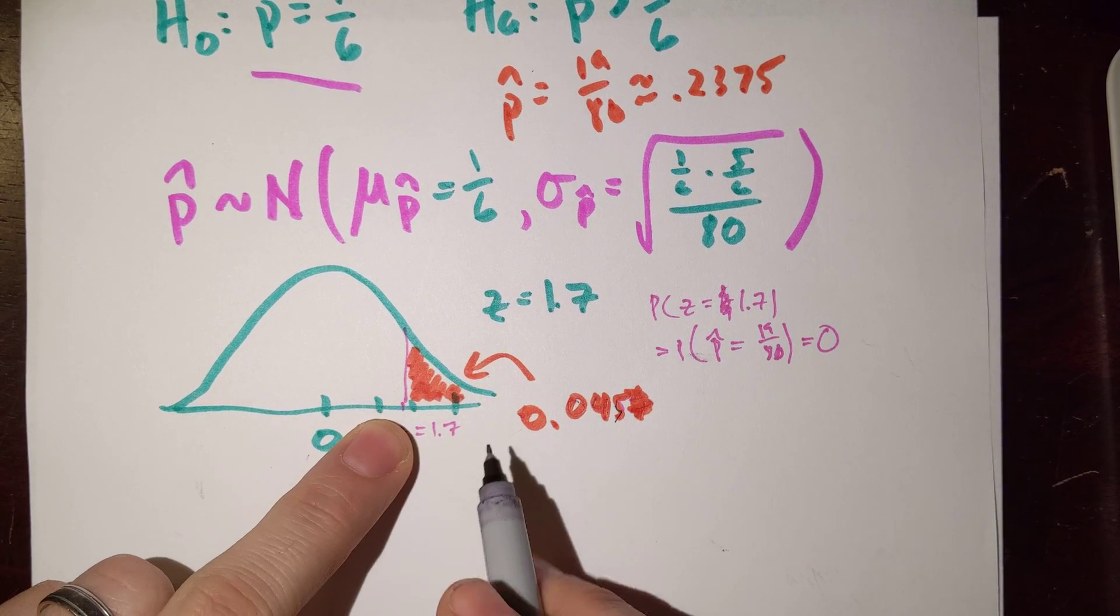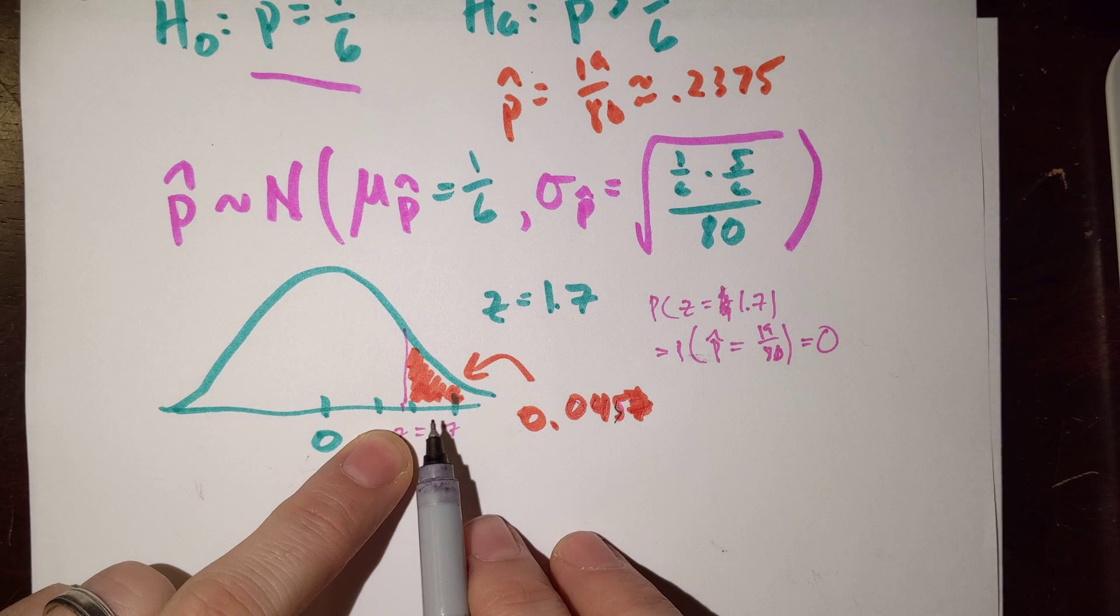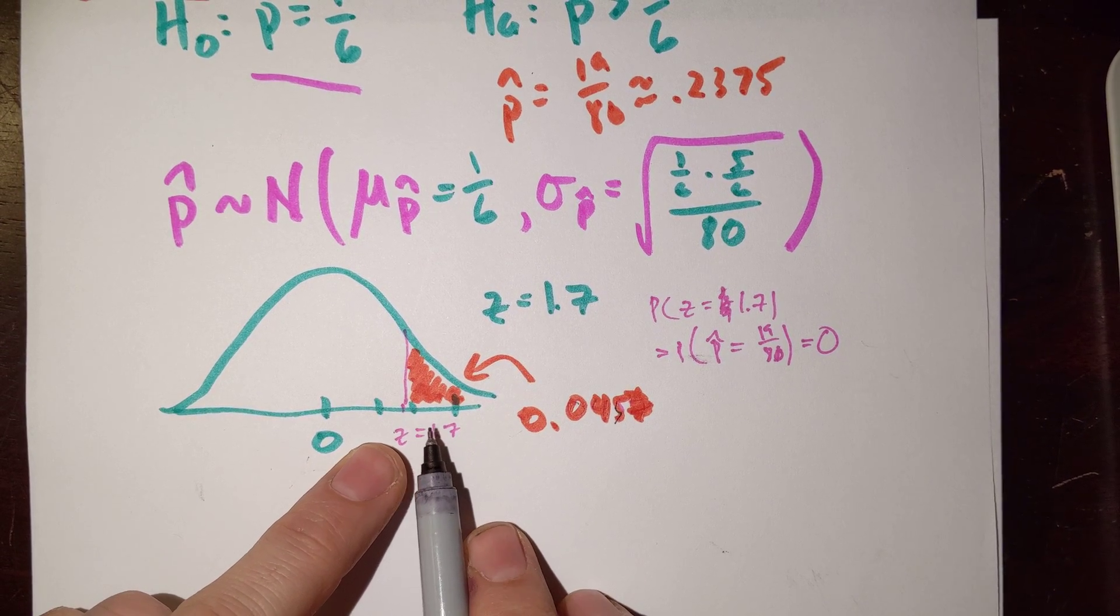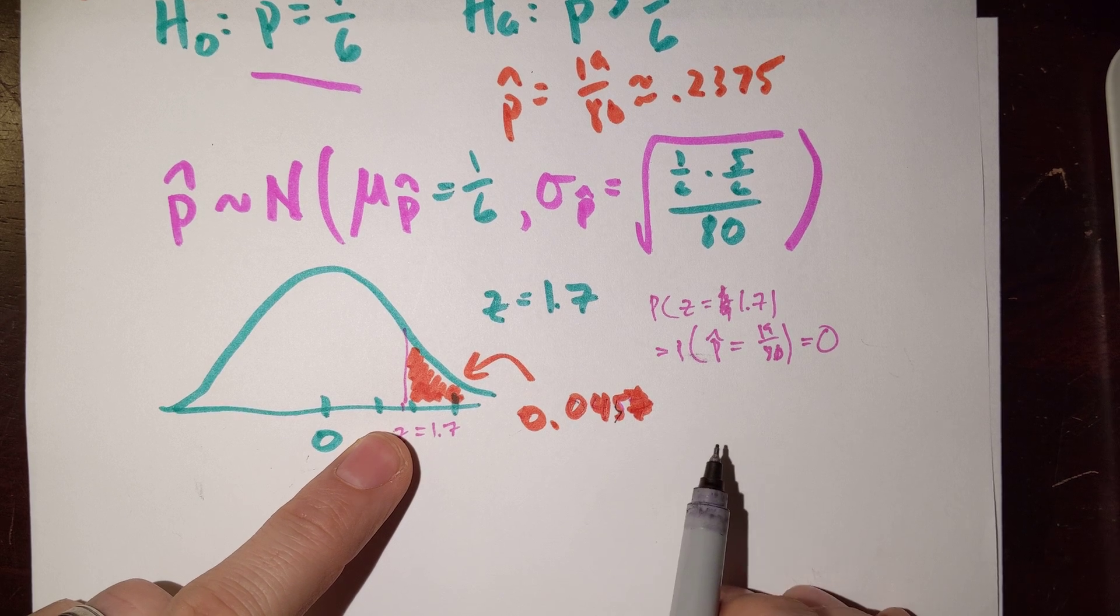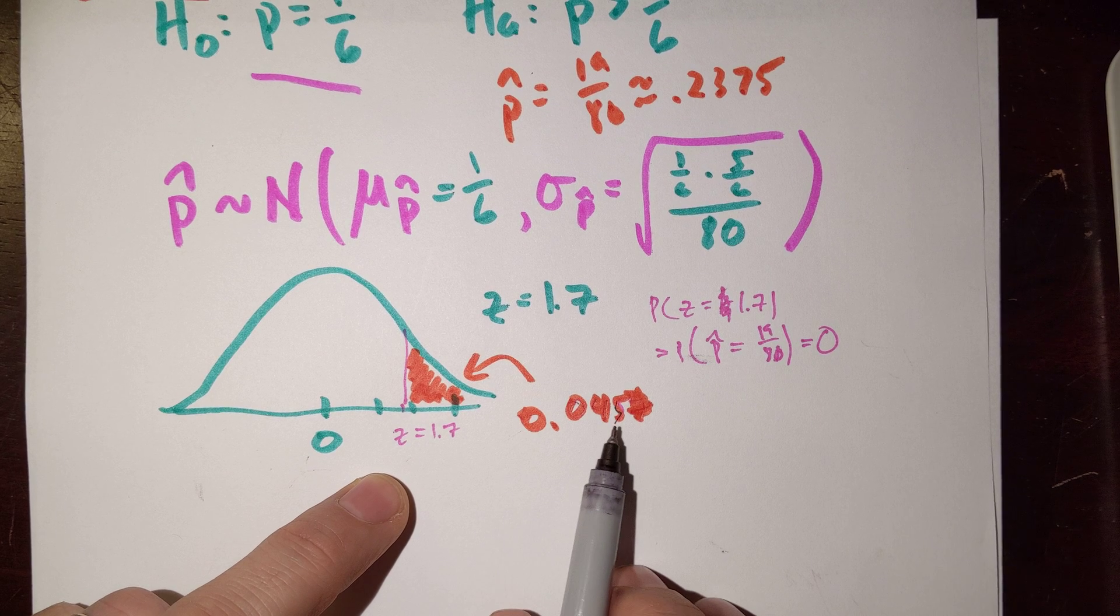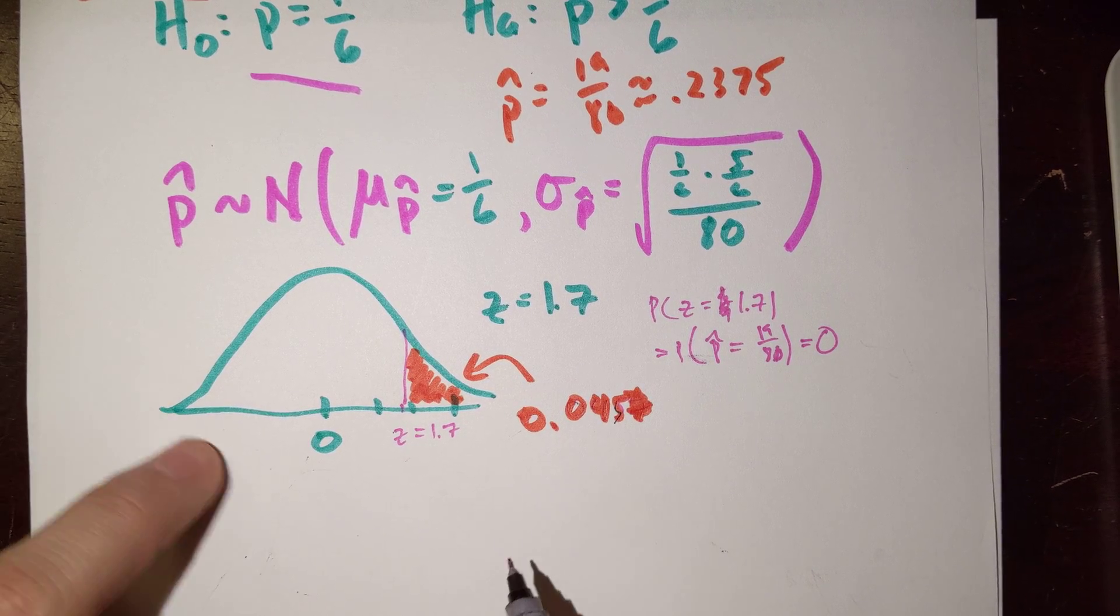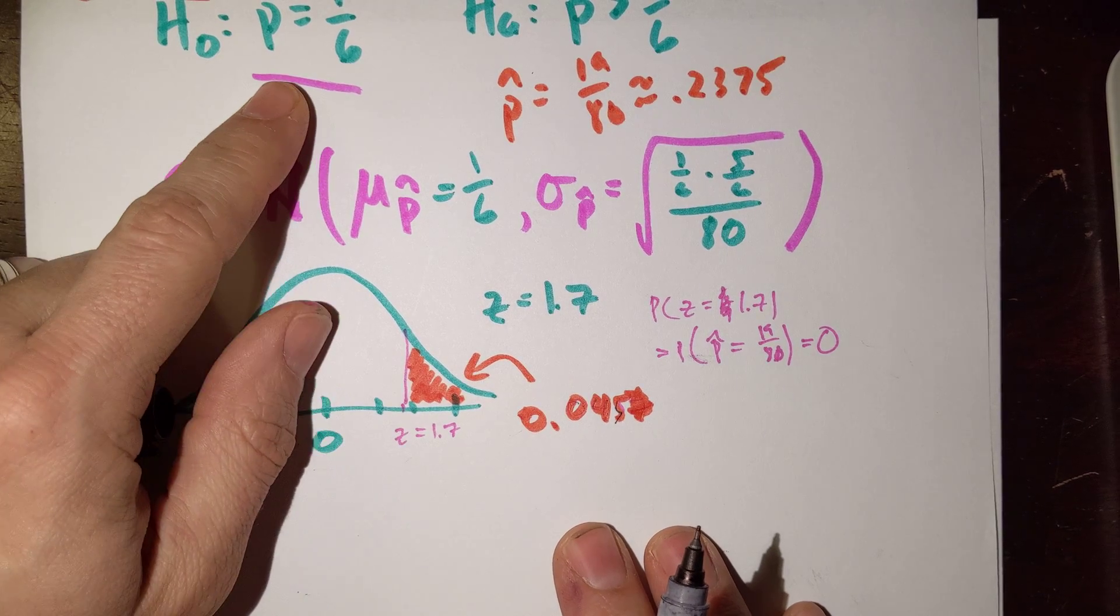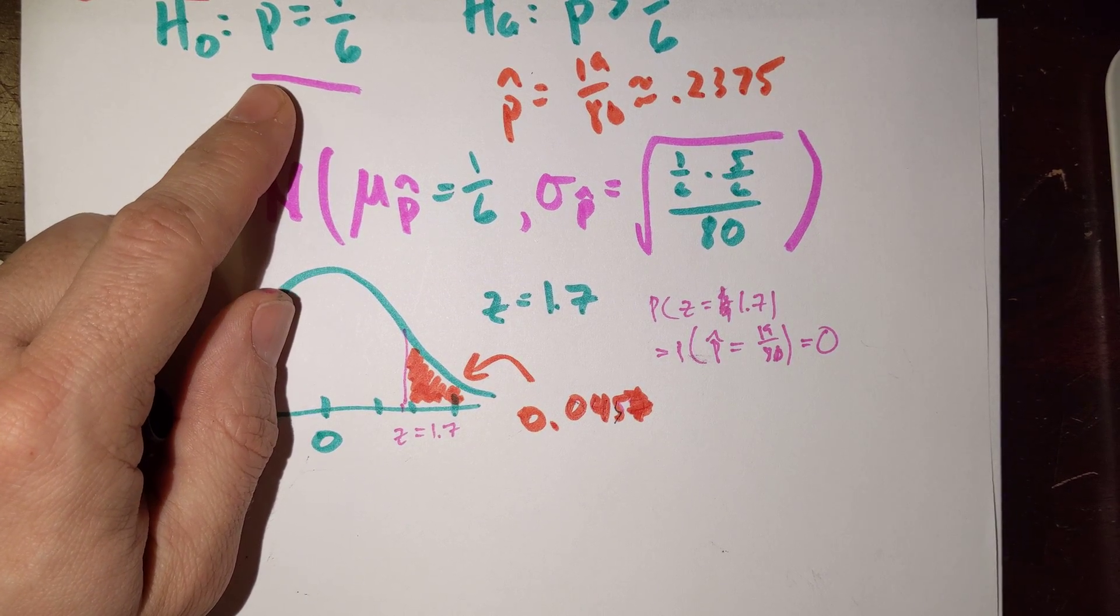In this case, we could say, well, the probability of our friend getting 19 out of 80 times getting a 6, or getting something even more extreme than that, well, the probability of that event is very, very low. It's only 4.5, 4.6%. And that might give me significant, in that reason, I might have reason to say that is significant evidence against my null hypothesis.